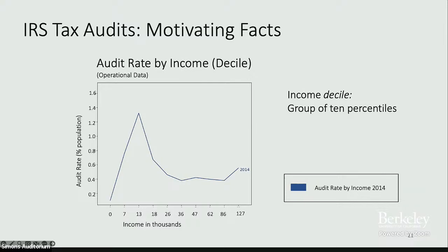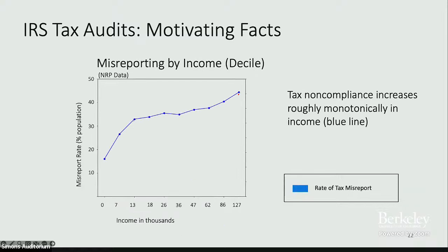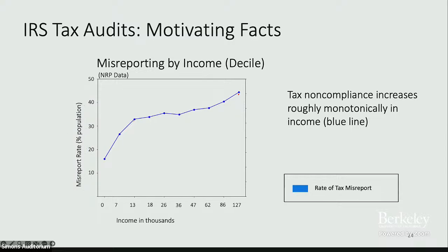This transfers over when we plot the graph in terms of income decile — 10 percentiles of income. That spike which looks small in dollar terms actually makes up a large portion of the US population. More strikingly, if we look at actual tax noncompliance as a function of income decile, we see that noncompliance actually increases roughly monotonically with income — the misreport rate, meaning whether someone misreported over $200, goes up as income increases. These two facts together motivate the question: if misreporting increases monotonically in income, why is there such a focus on the lower end of the income spectrum?